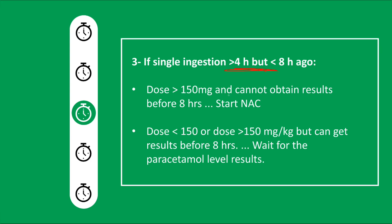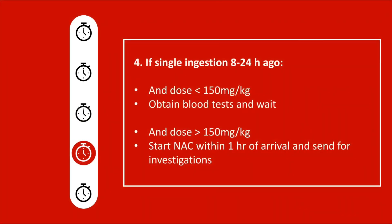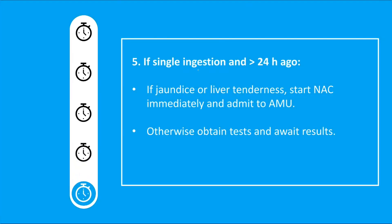If the patient arrives between four to eight hours, take a blood sample. If you suspect results will come after eight hours, start N-acetylcysteine, because if given within the first eight hours it is 100% protective for the liver. If results will come before eight hours, await them then decide. Between eight and 24 hours: if less than 150 mg/kg, await blood results; if more than 150 mg/kg, start N-acetylcysteine and send for investigations.